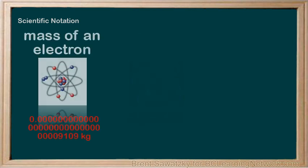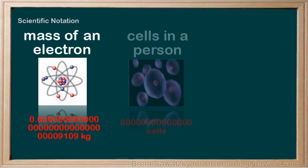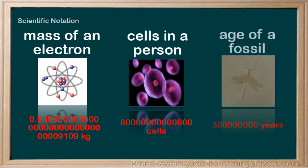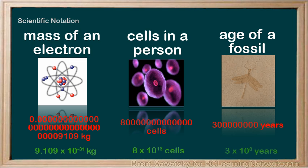The same problem existed in chemistry, biology, and Earth science — as you deal with, say, the mass of electrons, or the number of cells in people, or the age of a fossil. Here are some of those same numbers in scientific notation. Much easier to work with.